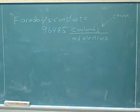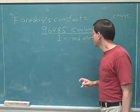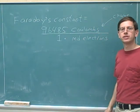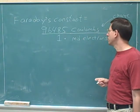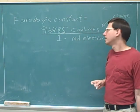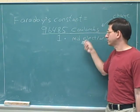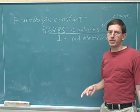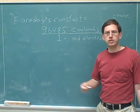What Faraday's constant tells us is that one mole of electrons has a total charge of 96,485 Coulombs. If you have one mole of electrons, the total charge on all of those electrons is 96,485 Coulombs. You can see why this is a constant — because the charge on an electron is a constant amount, so one mole of electrons always gives the same total charge. This concept could appear in either physics or chemistry — for example, in electrochemistry in the second semester.